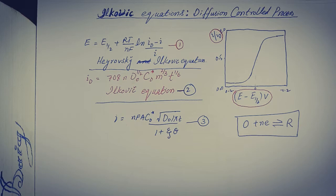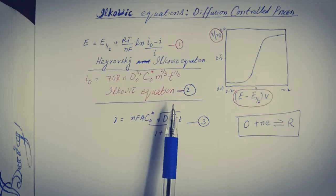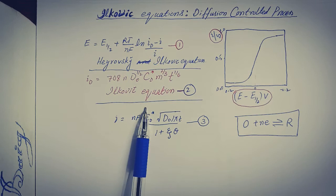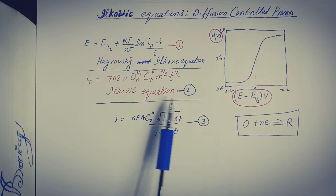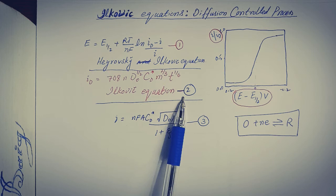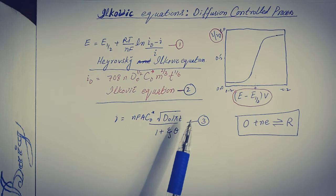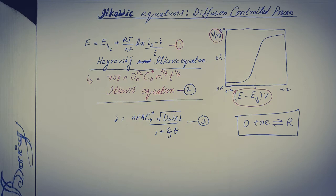We are discussing equations derived for the diffusion-controlled process. Here we have equation number one and two, known as the Ilkovic equations. The first is the Heyrovsky-Ilkovic equation and the second is given by Ilkovic. We are going to discuss these two equations in this lecture, how they are developed, and the considerations specified for heterogeneous electron transfer in the diffusion-controlled process.